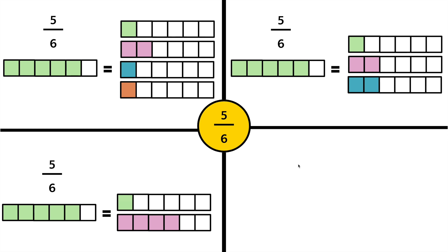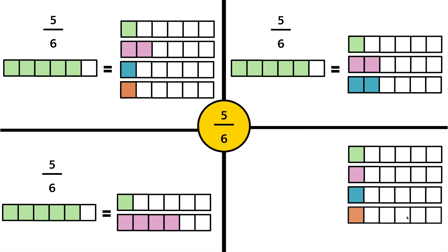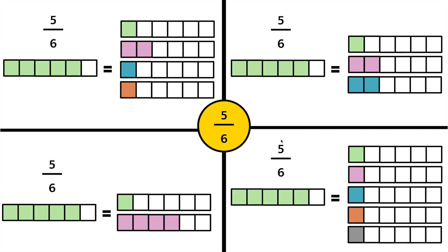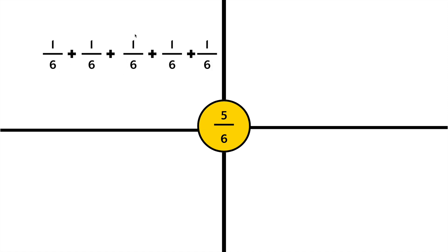One last way is 1/6 plus 1/6 plus 1/6 plus 1/6 plus 1/6 gives us 5/6. Both of these sides are equal in value. Let's decompose 5/6 in a different way. We can think of it like this: 1/6 plus 1/6 plus 1/6 plus 1/6 plus 1/6 is the same thing as 5/6.